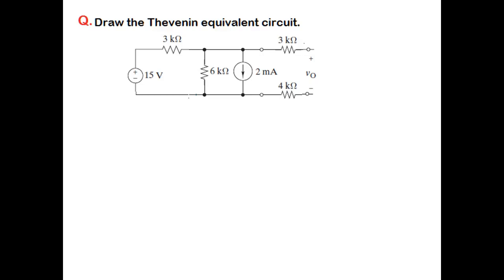We can use the source transformation technique. We transform these two into current sources and parallel resistances, and then by adding or subtracting the two sources depending on the direction, we can find the total current.